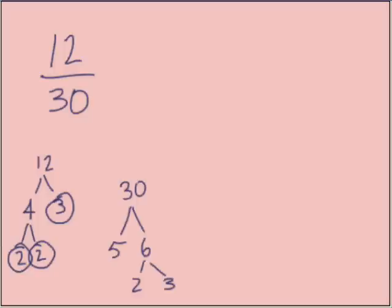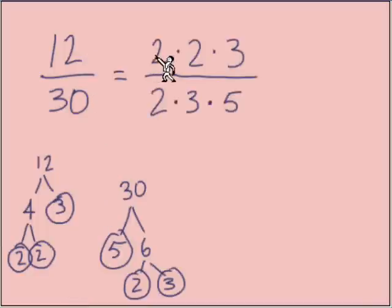We'll do the same thing with 30. Breaking down 30, we'll get prime factors of 2, 3, and 5. I'm going to rewrite this fraction, 12/30, as the prime factors. So my numerator, I'm going to write 2 times 2 times 3, and in the denominator for 30, we're writing 2 times 3 times 5.